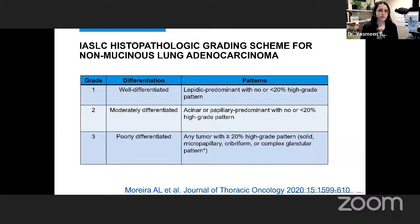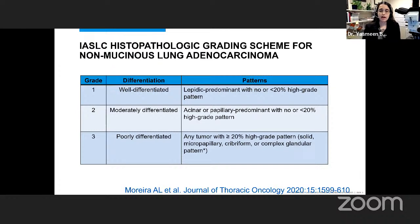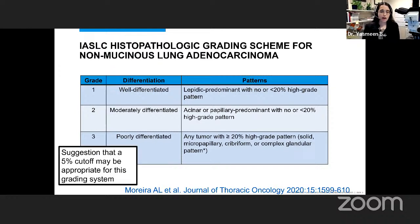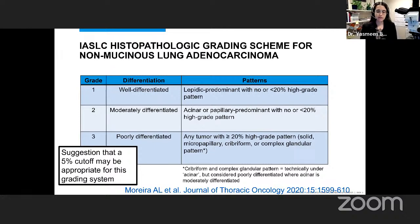The grading scheme for non-mucinous lung adenocarcinoma is well, moderately, and poorly differentiated, based off of patterns. A lepidic-predominant tumor with no or less than 20% high-grade pattern is well-differentiated. Moderately differentiated is acinar or papillary predominant with less than 20% high-grade pattern. Poorly differentiated is any tumor with 20% or more of a high-grade pattern — those high-grade patterns being solid, micropapillary, and also cribriform and complex glandular patterns, which are technically under acinar but considered poorly differentiated.